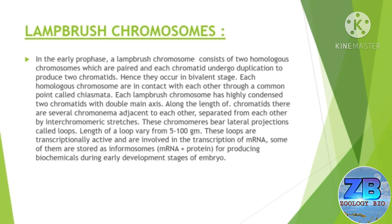In the lampbrush chromosomes, in early prophase, a lampbrush chromosome consists of two homologous chromosomes which are paired, and each chromatid undergoes duplication to produce two chromatids. Hence they occur in the bivalent stage. Each homologous lampbrush chromosome is in contact with the other through a common point called chiasmata. Each lampbrush chromosome has highly condensed two chromatids with a double main axis.